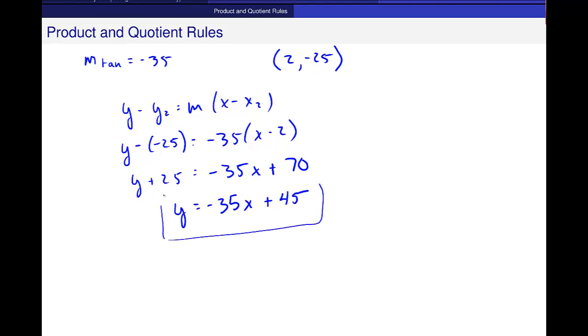There's the tangent line right there to this original graph. This is tangent to h of x, which was 3x minus 1 and x squared minus 8x plus 7 at x is equal to 2. So it's only the tangent line at that point. If we wanted to graph it, it would pass through that point on the graph.